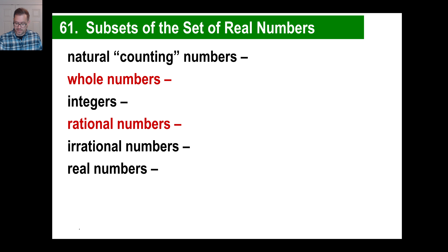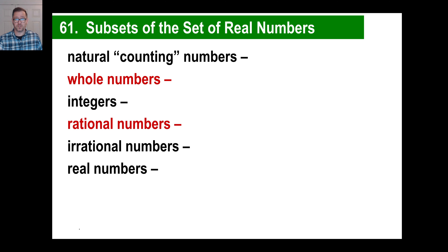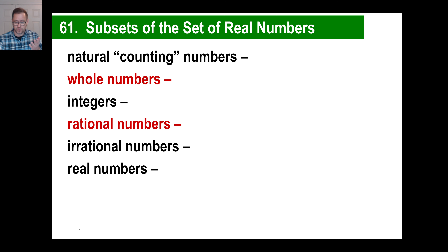0.62 — which set does that belong to? Nobody counts with 0.62. It's not a whole number; it's not an integer. Can you make 0.62 into a fraction — is it rational? Yes, you'd stick it over 1, or write it as 62 over 100 or 31 over 50. By definition it's not irrational, and it is on the number line somewhere, which makes it a real number.